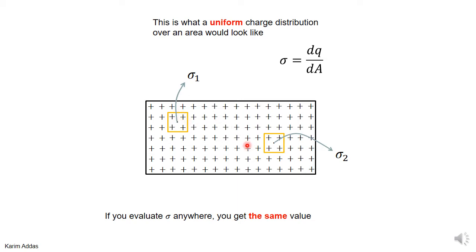So clearly, because the charge distribution is uniform here, any area that you make over here will have the same amount of charge as the same area over there. So when you calculate sigma at this point and at that point, you'll get the same value.